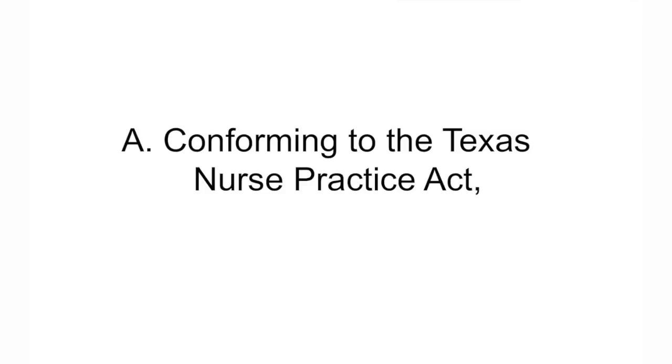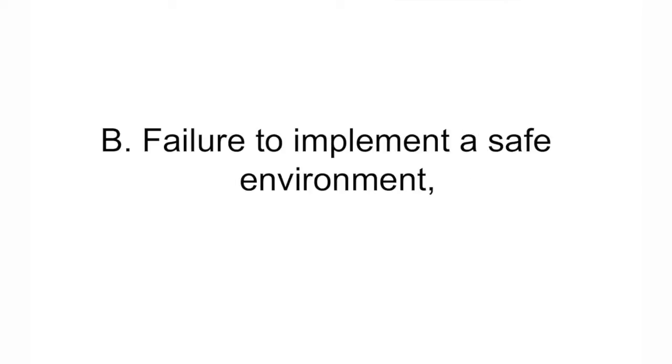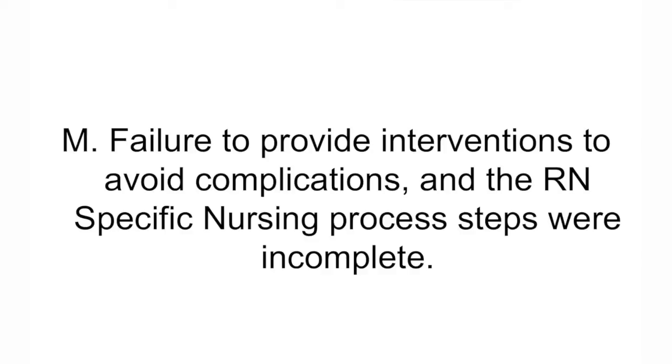In this case, it is clear that Mary did not follow several standards of practice, including Standard A — conforming to the Nurse Practice Act, Standard B — failure to implement a safe environment, and Standard M — failure to provide interventions to avoid complications. She also failed to follow the RN-specific nursing process steps. The performance improvement plan developed by management would address each of those standards. This event and action plan would be reported to the Board of Nursing by the peer review committee and the CNO, as this resulted in patient harm. Peer review is a mechanism to protect and assure safe patient care and to advocate for the best actions with the RN to assure ongoing safe care. The goal is excellence in patient-centered safe care and professional nursing practice.